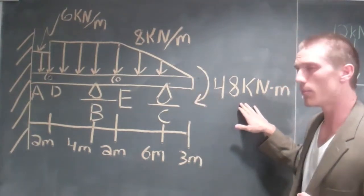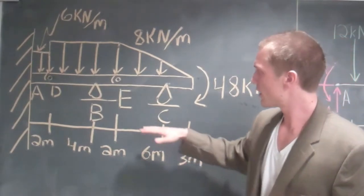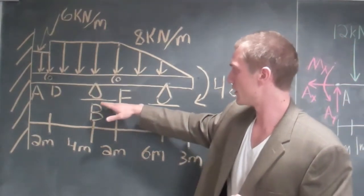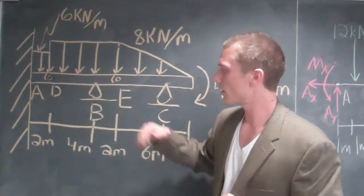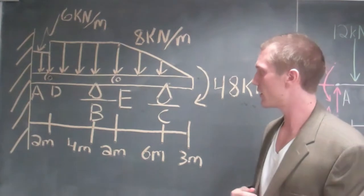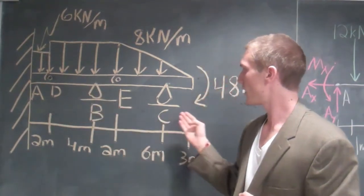We have a moment right here. This moment is 48 kilonewton meters, and this beam is fixed on two rockers right here, and it has two pins. Our objective is to find the support reactions at A, B, and C.